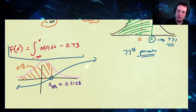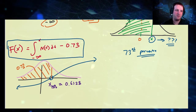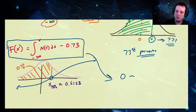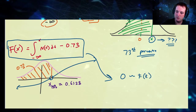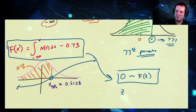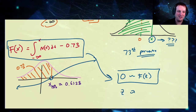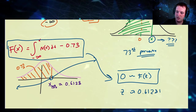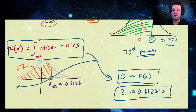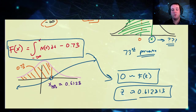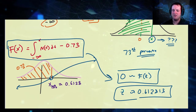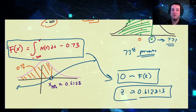We find that this 73rd percentile is approximately equal to 0.6128. If you're doing this in Desmos, Desmos has a nice little solving feature — you would type '0 ~ F' on one line, and then on the next line type z, and z will be approximately equal to 0.612813. That is one of the most common types of inverse problems that we solve. Later we'll give some applications, but first let's look at another type of problem.